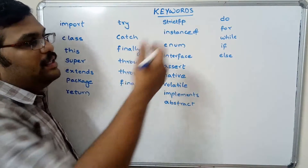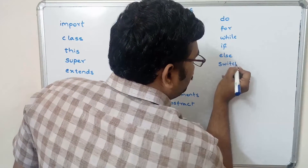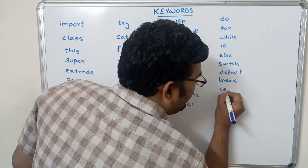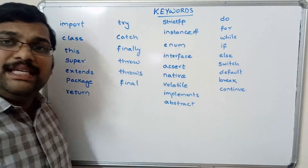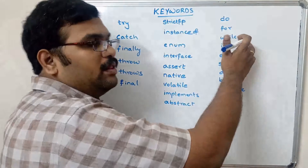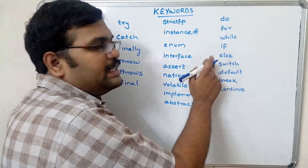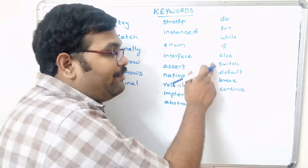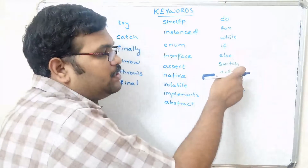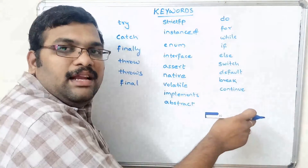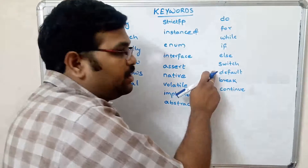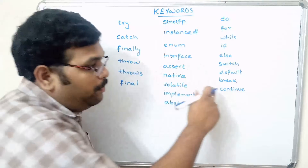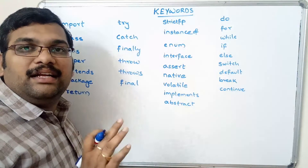Control structure keywords: do, for, while are iterative control statements; if and else are conditional statements; switch is a multi-way selection statement; default is used in a switch case — if the argument of a switch doesn't match any case label, the default case executes. Break means irrespective of the condition, whenever the control executes the break statement it exits the loop. Continue skips the current iteration and continues with the next.